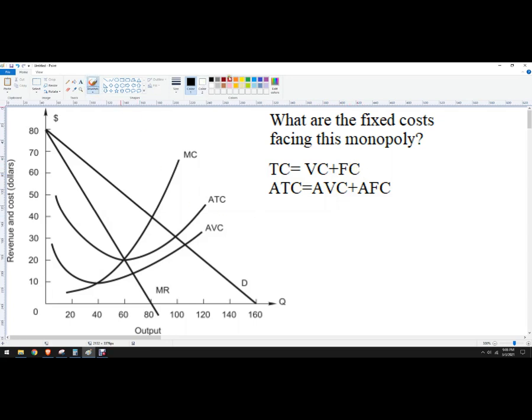So let's just pick a quantity here. We'll pick a quantity of 60. So that looks like right about 20. So in this case, our average total cost is 20.